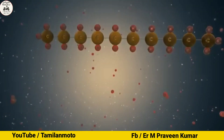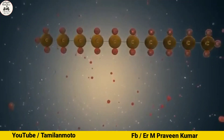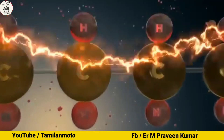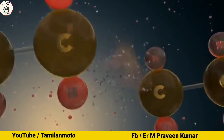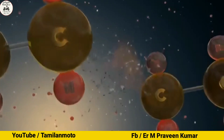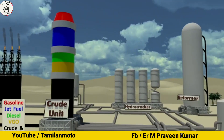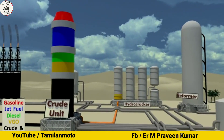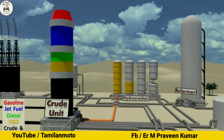This is the carbon and hydrogen molecules. This is the catalyst. This is the long chain — cut, cut, cut, small chain. That's why we use the fluids.